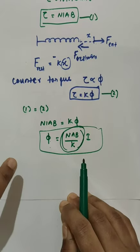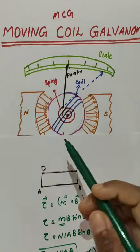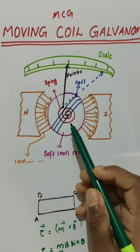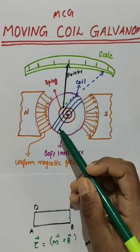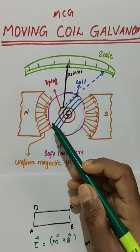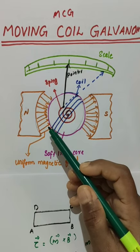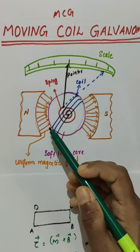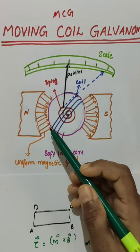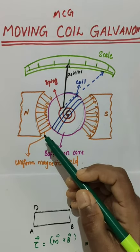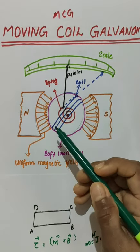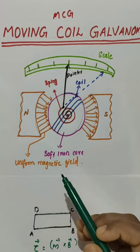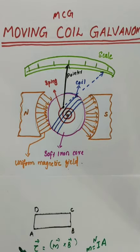A moving coil galvanometer can be used in a number of ways: as a detector to detect or check if a current is flowing in the circuit, as an ammeter to measure electric current, or as a voltmeter to measure the voltage. In the next video, we will talk about how the galvanometer can be used as an ammeter and as a voltmeter. In this video, we have introduced the moving coil galvanometer — its working and its principle. I hope you all understood this concept. Thank you.